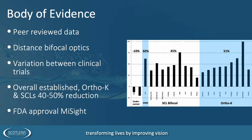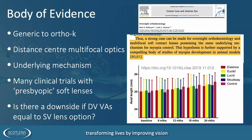Studies show roughly similar reduction rates between Ortho-K and soft contact lenses. Mark Bullimore showed in 2019 or 2020 that it's the underlying mechanism — peripheral corneal power changes with Ortho-K and the distance-centre multifocal optics in bifocal or multifocal soft lenses — that are responsible for myopia control. Many clinical trials have used presbyopic corrections rather than specific myopia control devices; it's the distance-centre multifocals that make it work. From a contact lens point of view, as long as we're ensuring patients have the same distance visual acuity, there's not really a downside to putting a multifocal optic onto the cornea or lens.